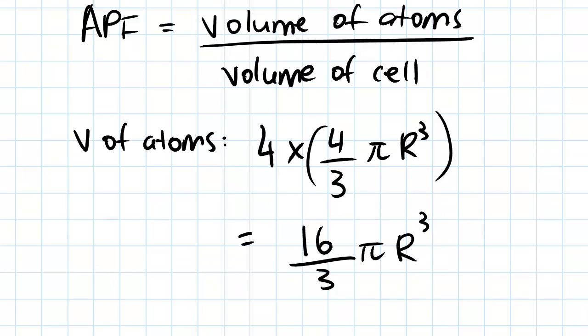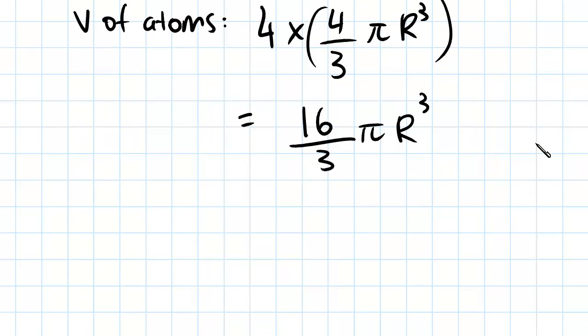Okay, so now we've done our numerator, we're just going to now do the denominator. And as you will recall, the volume of the cell is always going to be a cubed. So we need to be able to determine this though in terms of r. So for an FCC, you have to recall. So first I'll just do volume of unit cell.